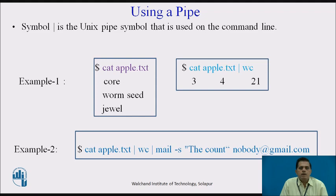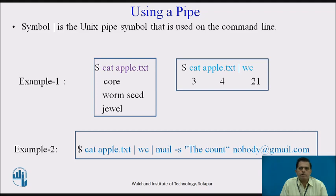Based on the pipe, here is an example. We have a file apple.txt and display its contents using the command: cat apple.txt. The file contains the contents: core, warm seed, g-way. Now to measure the number of lines, words, and characters from this file, we use the pipe command to pass the output of one command to the input of another. We pass the output of cat apple.txt to the input of word count, that is wc. The output of apple.txt contains those three lines, and wc counts the number of lines, words, and characters.